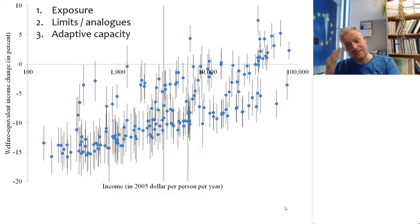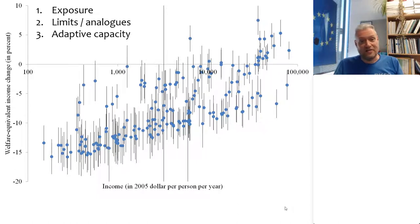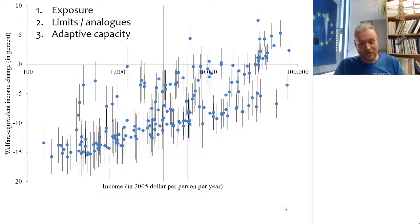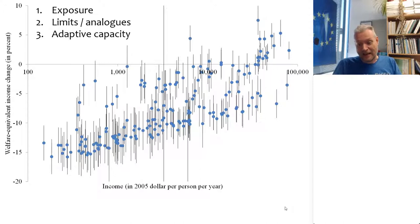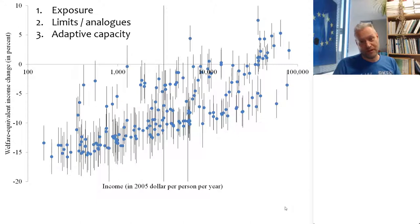And the pattern is quite severe. The total average economic impact of 2.5 degrees of warming is that the average person would feel as if she had lost 1.3% of her income. But if we go to the poorest places on the planet, it's not 1.3% — it's more like 13% of income. So those impacts are an order of magnitude more severe.